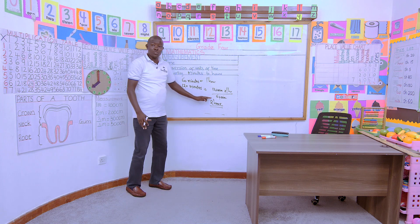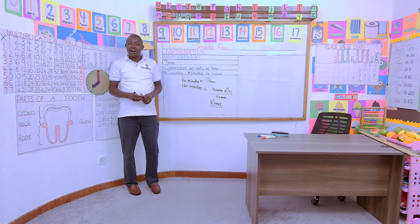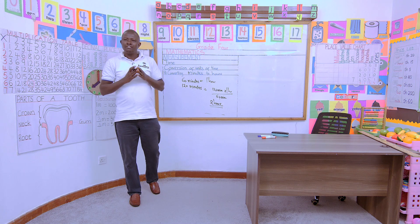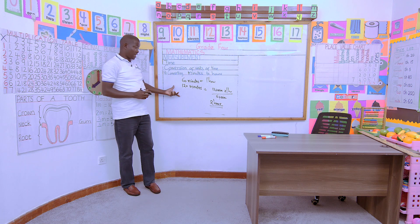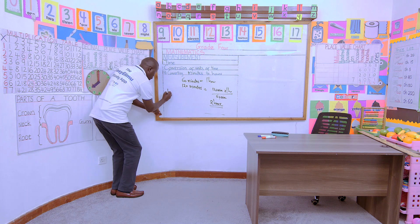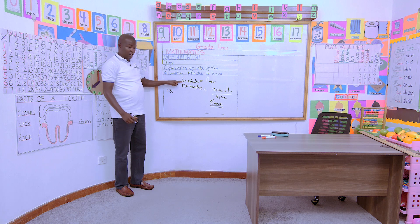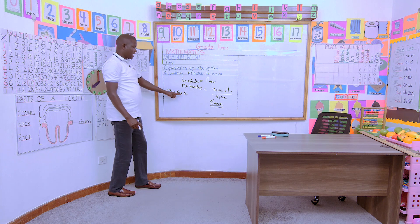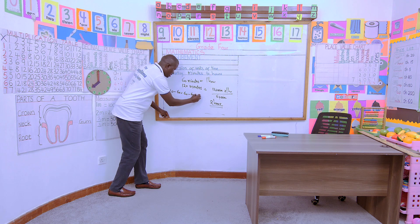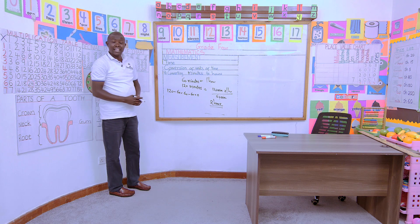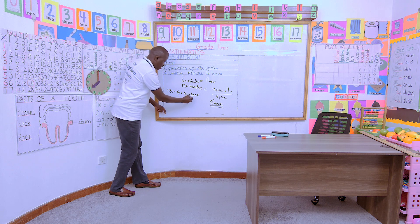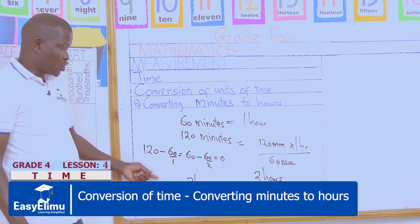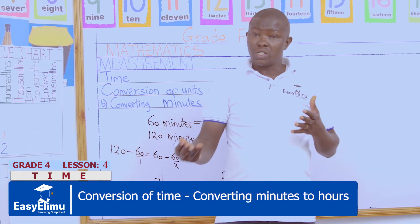So 120 minutes is equivalent to 2 hours. You can also use repeated subtraction. We take 120 minutes and take away 60 — we remain with 60. Then take away 60 again — we remain with 0. How many times did we take away 60? One and two — so we have 2 hours. You can use division as repeated subtraction, or use the relationship between multiplication and division.